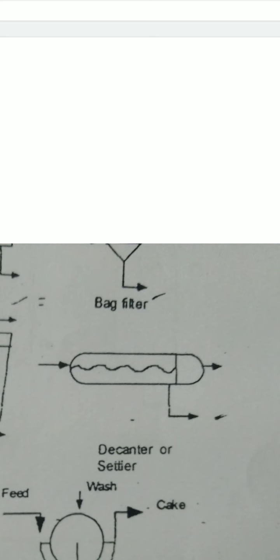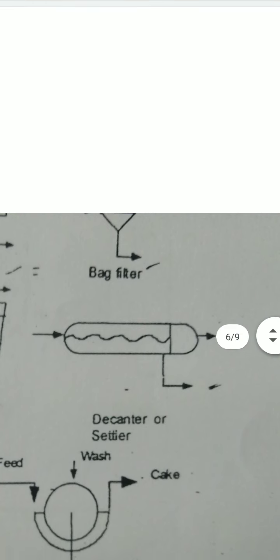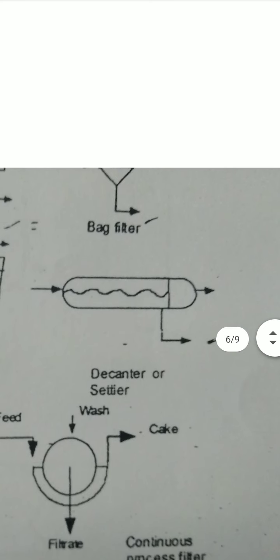Next we take the symbol of decanter or settler. Settler means material settles down. Decanter means heavy material settles inside and the liquid on top can be decanted and removed. So the symbol for settler or decanter is used when a material has suspended solids — the particles settle, and the fluid on top is decanted.